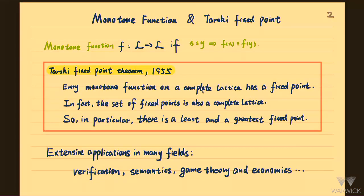I want to state the Tarski fixed point theorem in a very general way. We say a function f is monotone if for any two points x and y such that x is at most y, f(x) is also at most f(y). Note that two points may be incomparable, but if they are comparable then the function should preserve the order. The Tarski fixed point theorem states that for any monotone function on a complete lattice, it has a fixed point, and in fact the set of fixed points is also a complete lattice.